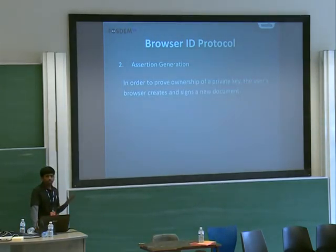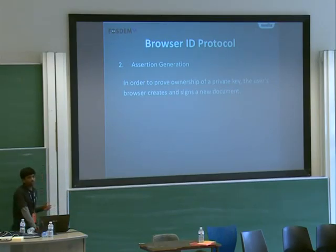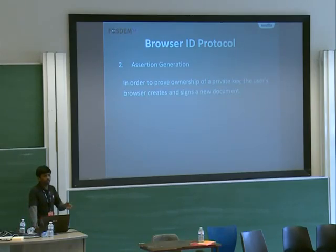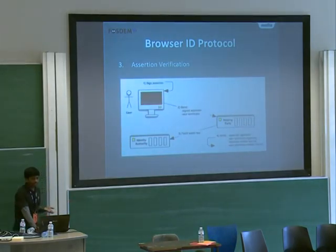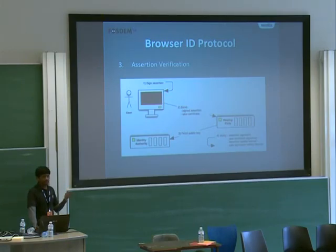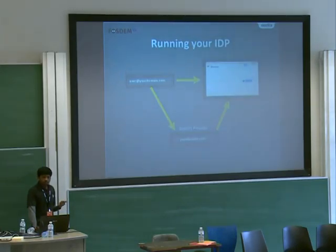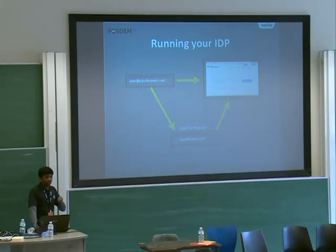The certificate is sent back to the user. After it's received, the user has to prove ownership. The user's browser creates an assertion containing the email ID, key, and other details. That assertion is sent to the relying party along with the user certificate, and then it's validated. This is an overview of how you log in — the identity provider validates it and you're logged in to the website.